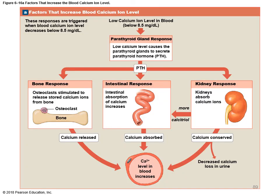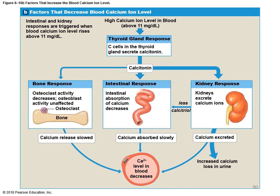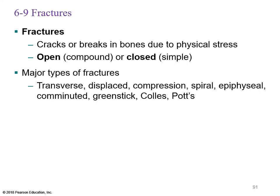Bone fractures occur when a bone cracks or breaks due to physical stress — they can be open (compound) or closed (simple). Major types include: transverse fractures (perpendicular cut through bone), displaced fractures (a fragment displaced from normal position), compression fractures (end plates compressed, like crushing a can — common in elderly with osteoporosis), spiral fractures (caused by twisting with a planted foot), and epiphyseal fractures (through the growth plate). Also: comminuted fractures (many pieces), greenstick fractures (splintering in children), Colles' fractures, and Pott's fractures.